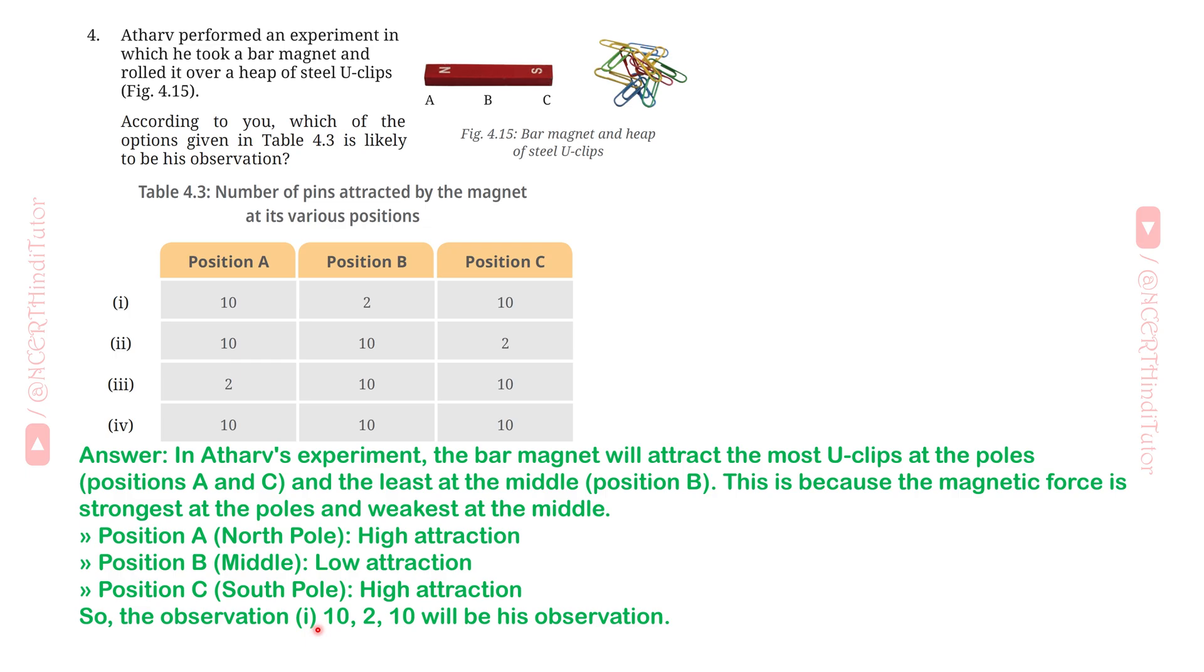So, the observation: Position A: 10, Position B: 2, and Position C: 10 will be his observation.